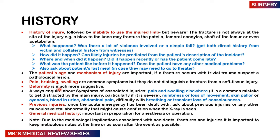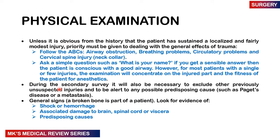For physical examination, unless it's obvious the patient has a localized modest injury, priority should be given to saving the patient — follow the ABCs: airway, breathing, circulation, and ensure a cervical collar is in place until cervical spinal injury is ruled out. A quick way to assess airway and breathing is to talk to your patient — ask their name. A sensible answer means they're conscious, have a good airway, and are breathing.